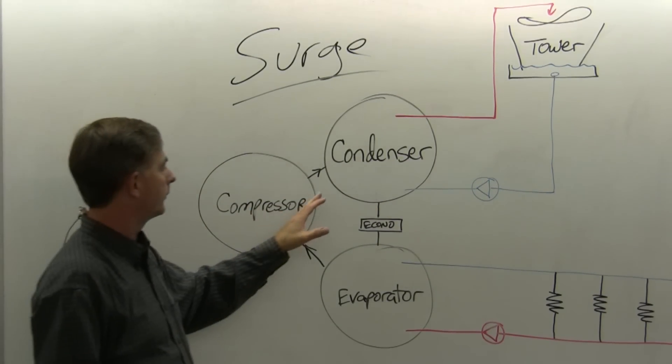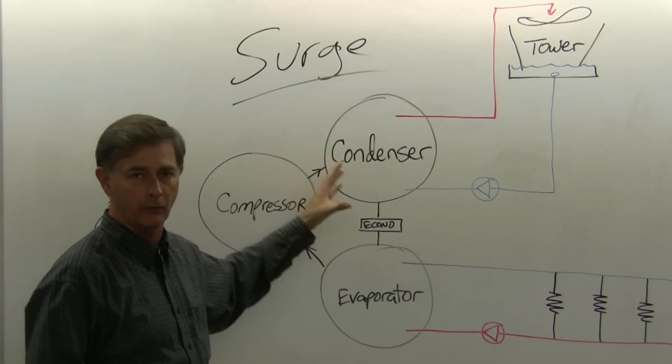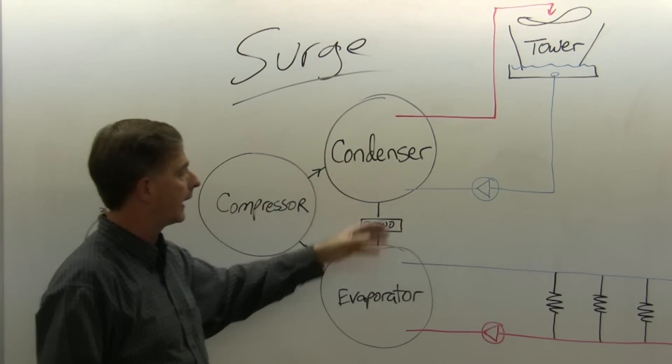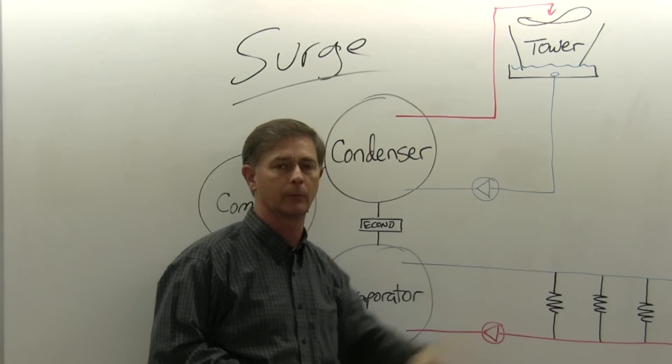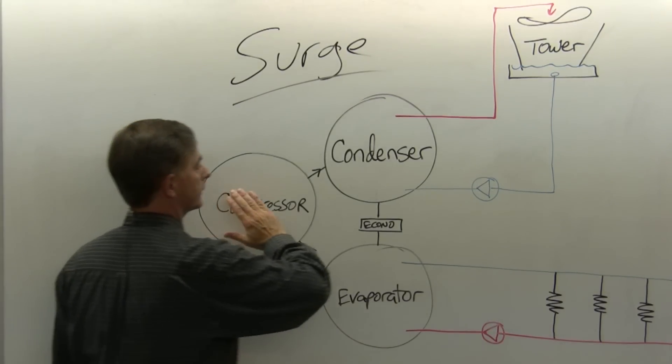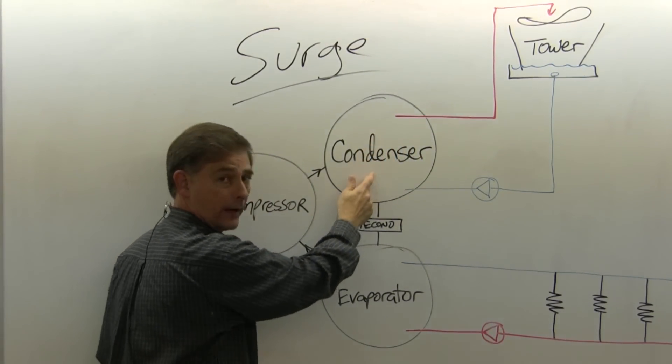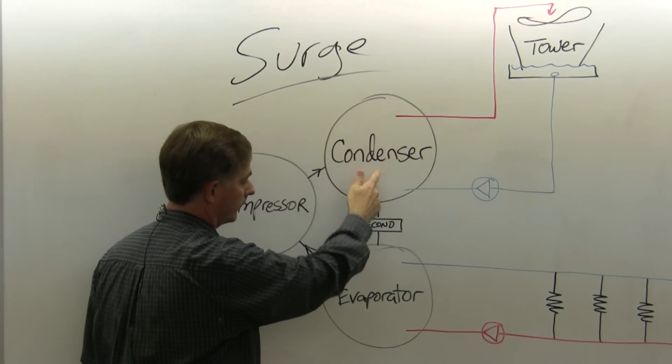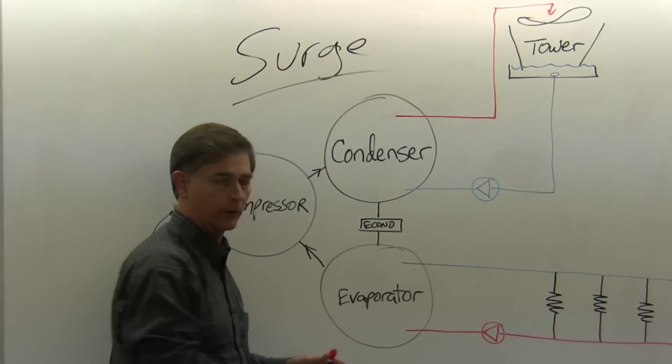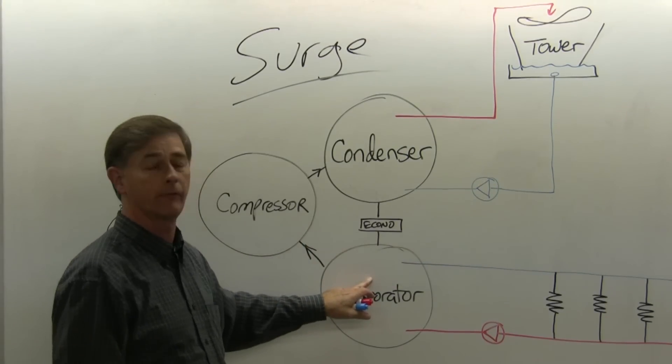I've drawn on the table just a basic diagram of a chiller and its associated system components. We've got our compressor, which sends our refrigerant to the condenser. That refrigerant flows down as a liquid through our economizer or flow valve or some other type of metering device into the evaporator.